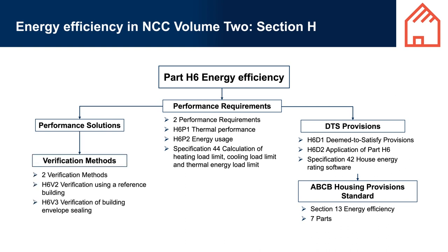Two verification methods exist. H6 V2 Verification Using a Reference Building can be used to comply with H6 P1. This method requires comparing the performance of the proposed building with a reference building that meets the DTS provisions. H6 V3 Verification of Building Envelope Sealing can be used to meet the building sealing part of H6 P1. It tests air leakiness using the blower door test, requiring the building envelope to achieve air permeability of not more than 10 cubic metres per hour per metre squared at 50 Pa pressure, tested in accordance with AS/NZS ISO 9972 Method 1.